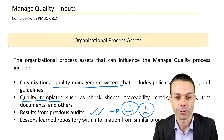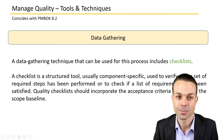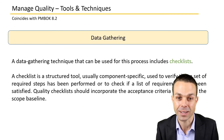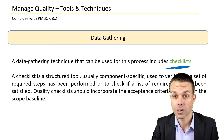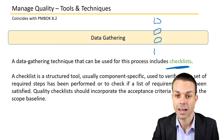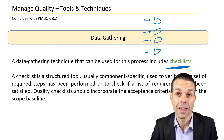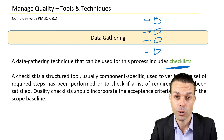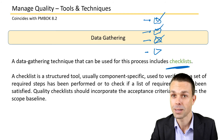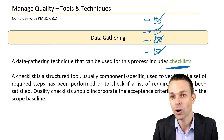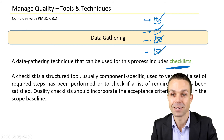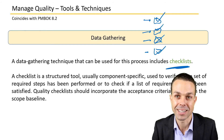The tools and techniques include data gathering, specifically checklists. For quality or testing, we might have a list of criteria an item needs to meet. Someone going through the testing process says yes it meets this criteria, yes it meets that one, no it doesn't meet this one — that is the checklist. It's an easy way to see what should be right and clearly identify where something is wrong.